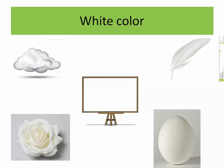Let's go to the colors. Today we have the white color. Here in this picture we have many objects that are white, such as cloud, flower, whiteboard, feather, egg. Repeat after me: cloud, flower, whiteboard, feather, egg. All these objects are in white color. So Kijito, try to find other objects in our life that are white — this will be your homework.